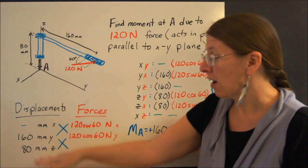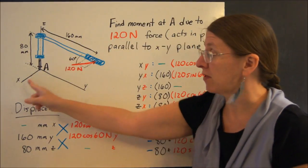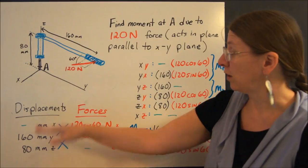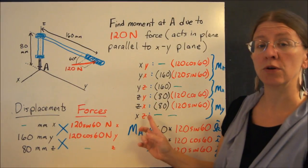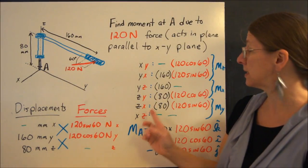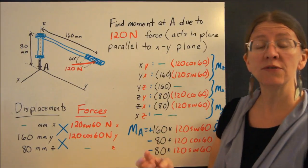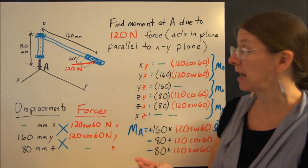You only have two different displacements between there and point A, and two different components of the force. So when you actually put this into your list of possible moments, you will have three of them that are automatically zero, which leaves you only the three different ways that this can go.